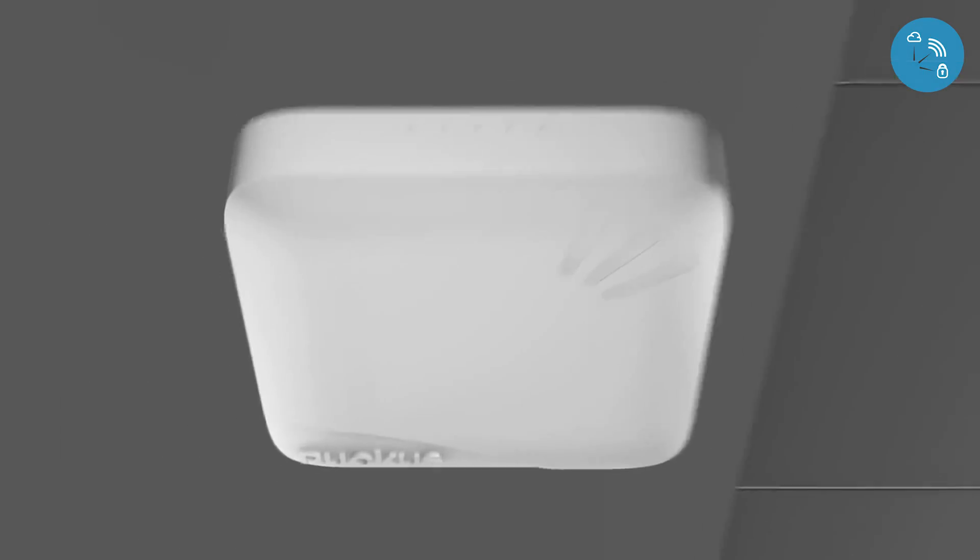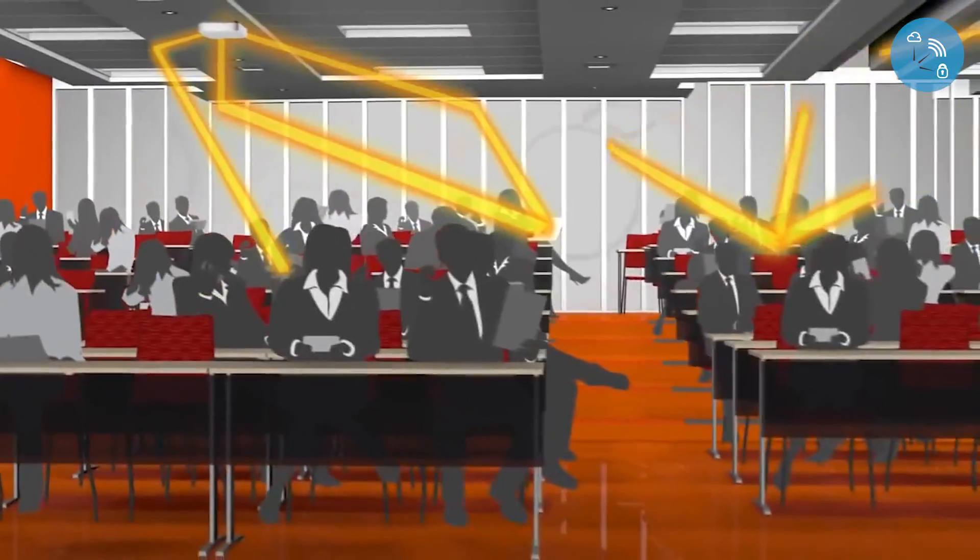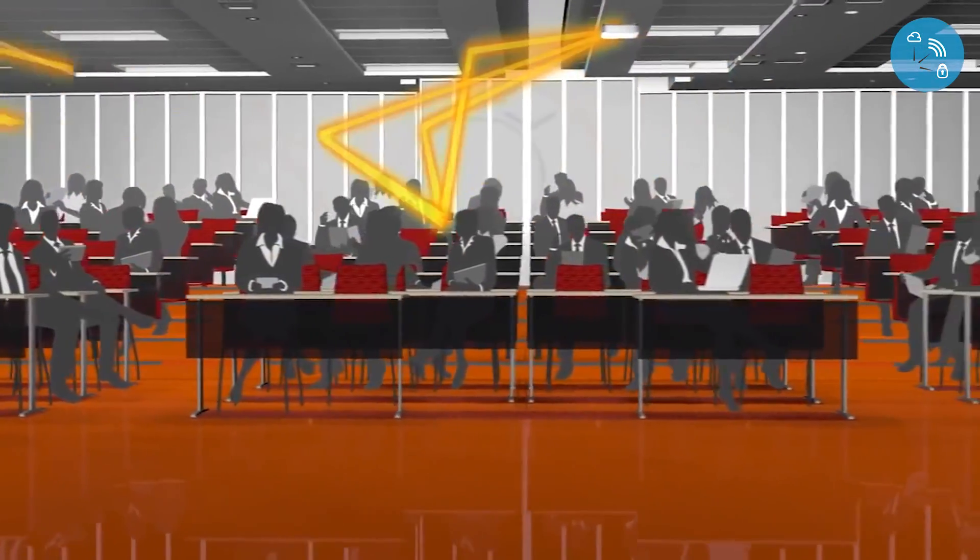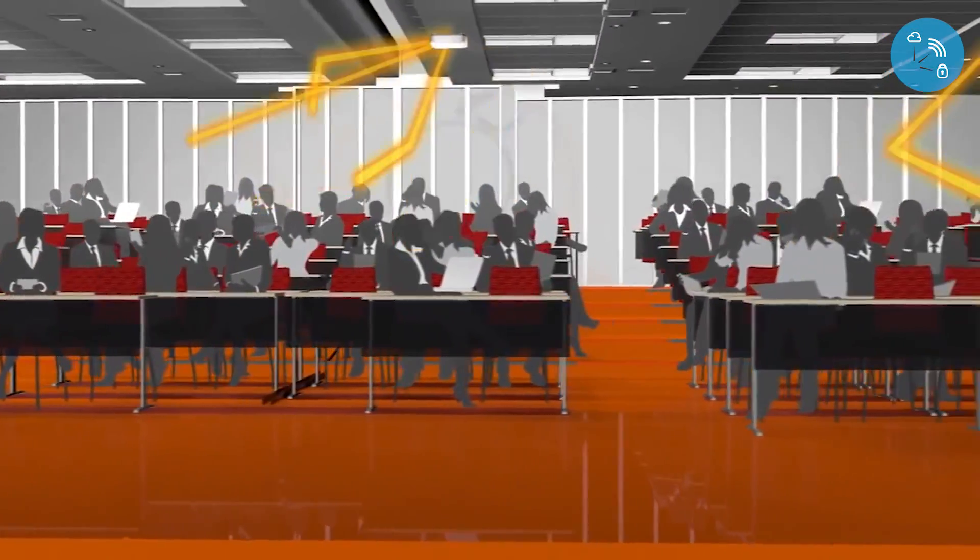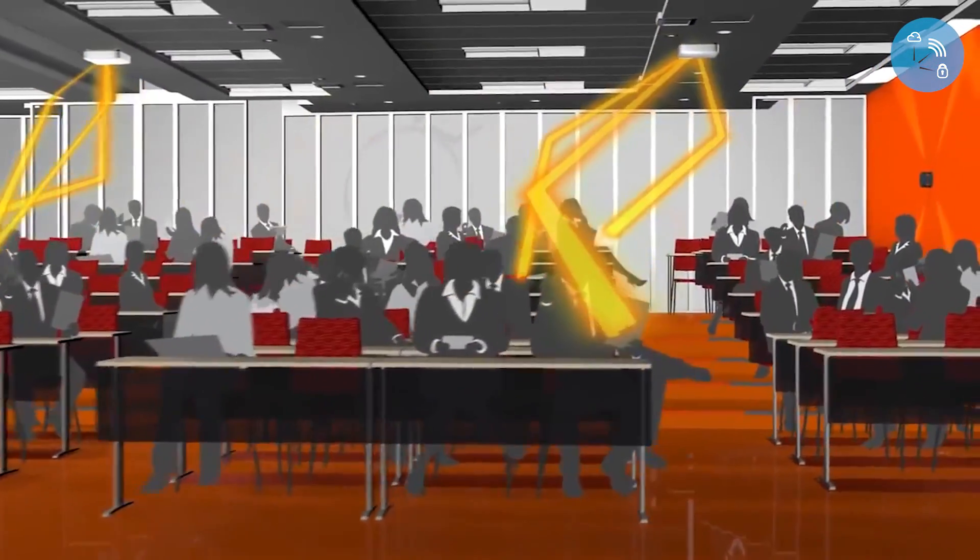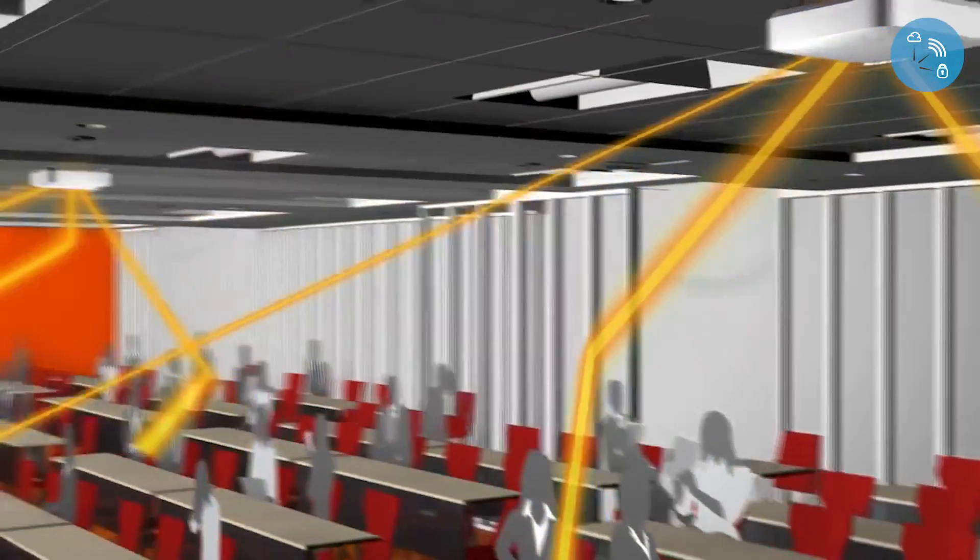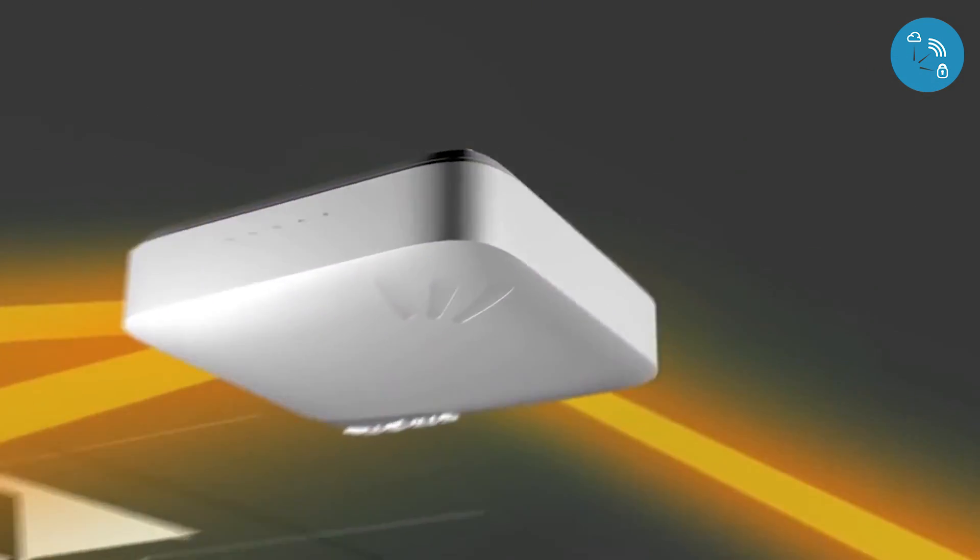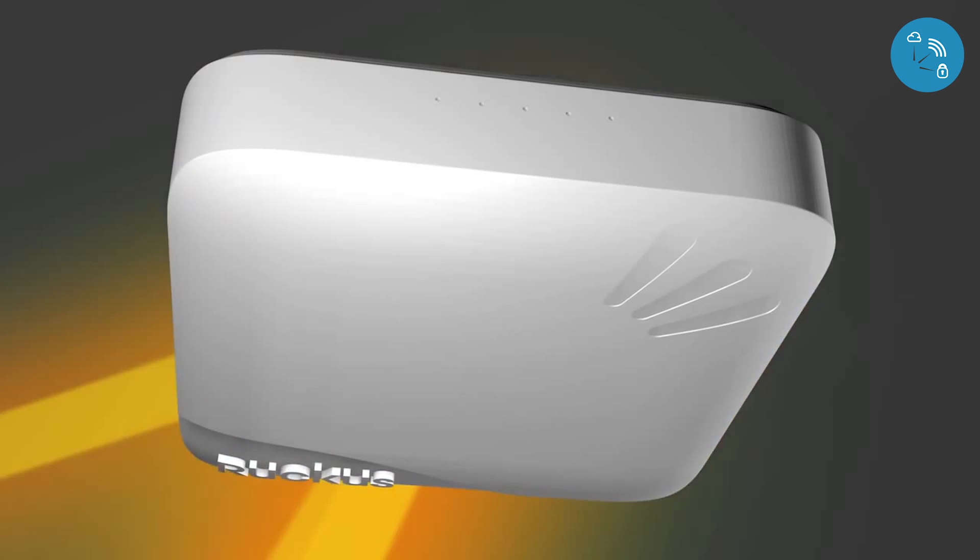Having complete control over communication between the access point and devices has additional technical benefits. To achieve the highest possible throughput, Wi-Fi standards make use of complex techniques like spatial multiplexing and multi-user MIMO. Maximizing these capabilities requires complete control of the signal instead of just blasting Wi-Fi energy in all directions and hoping for the best.